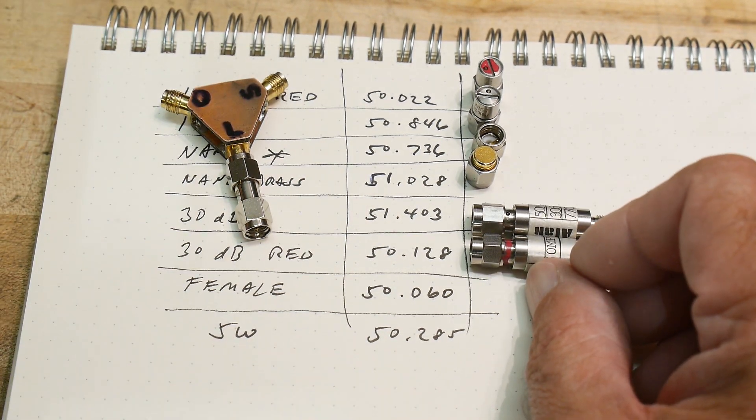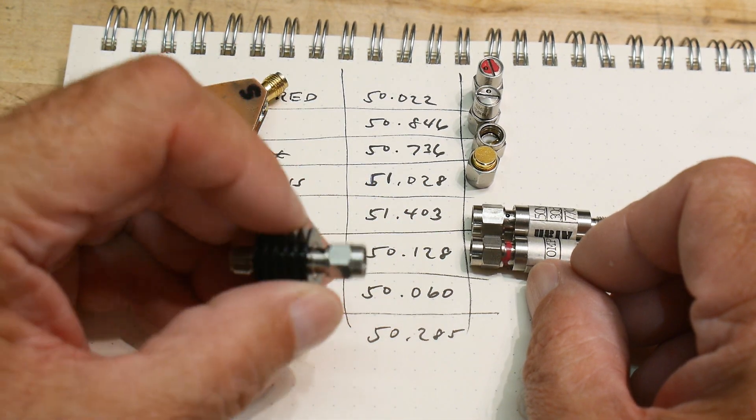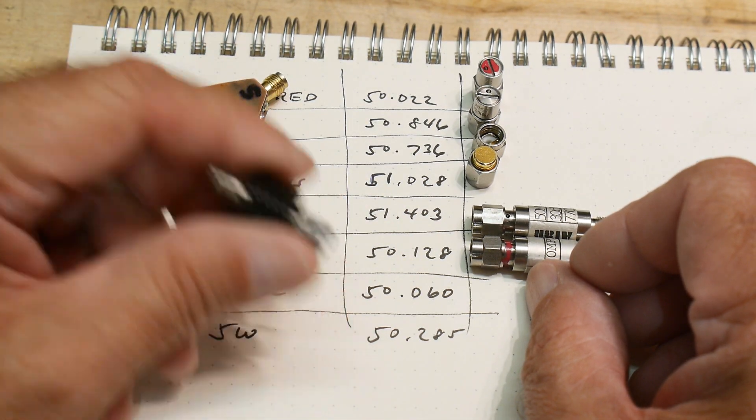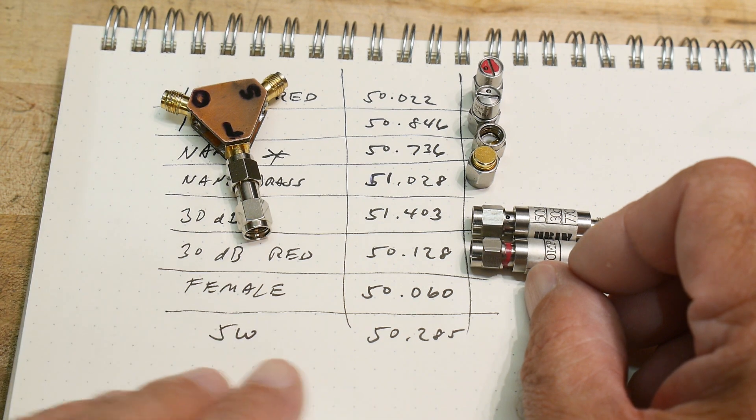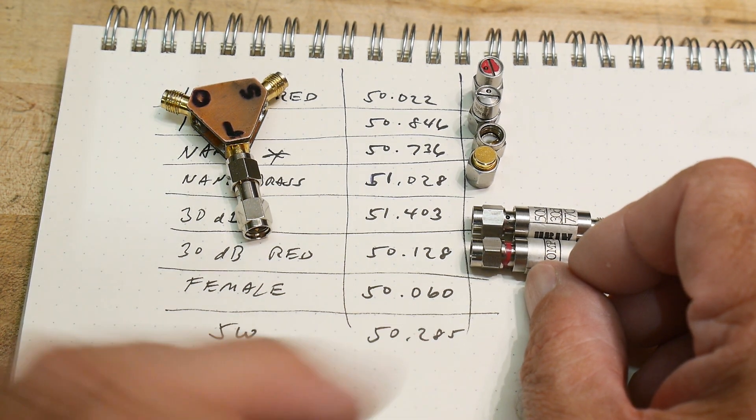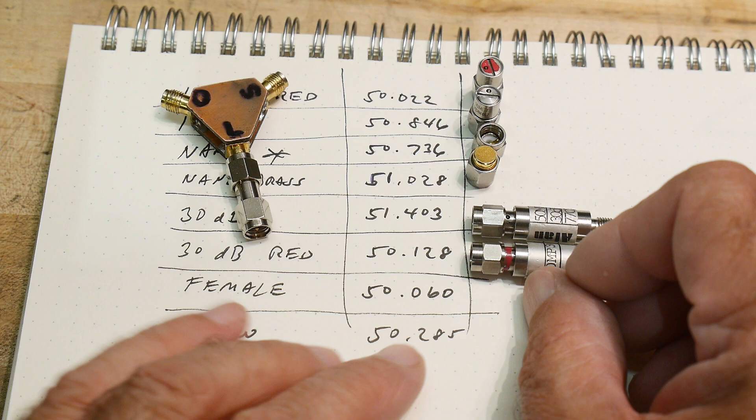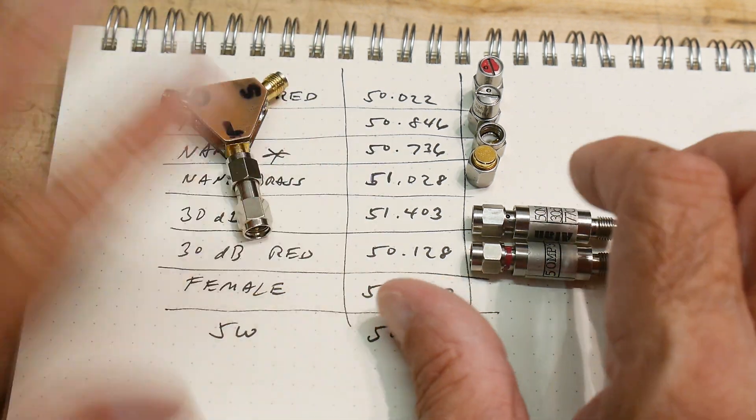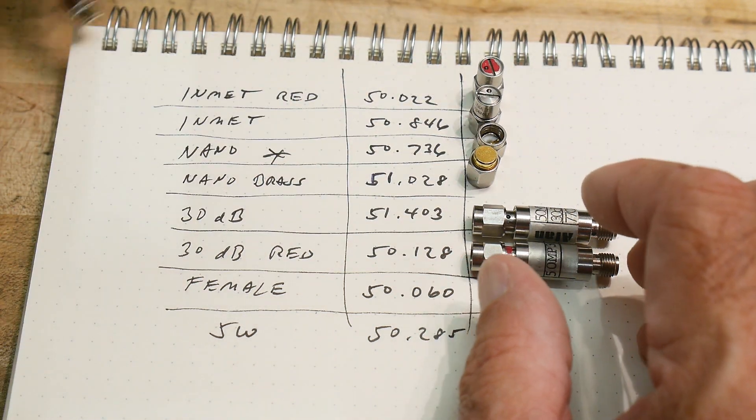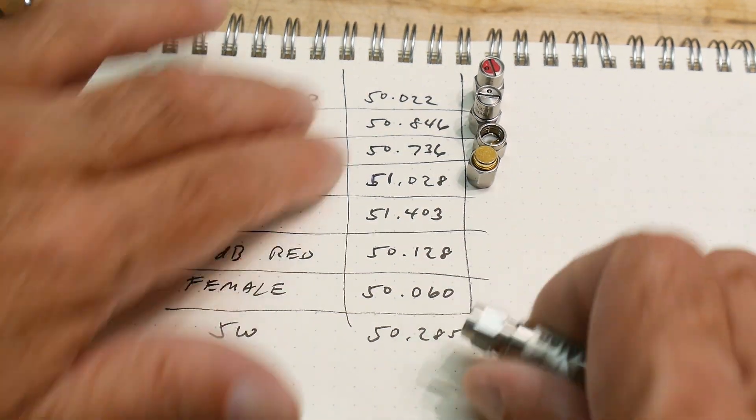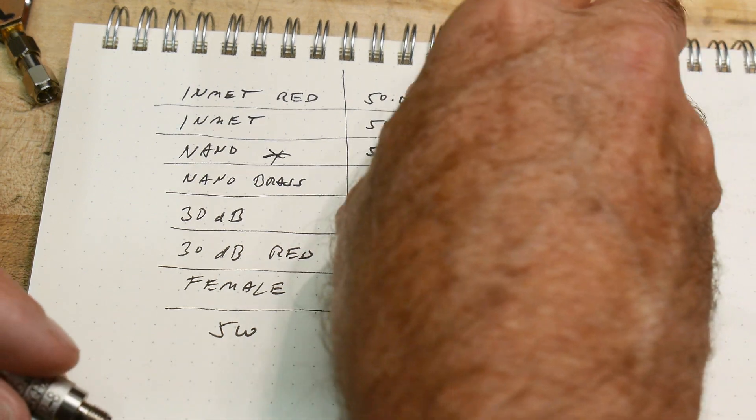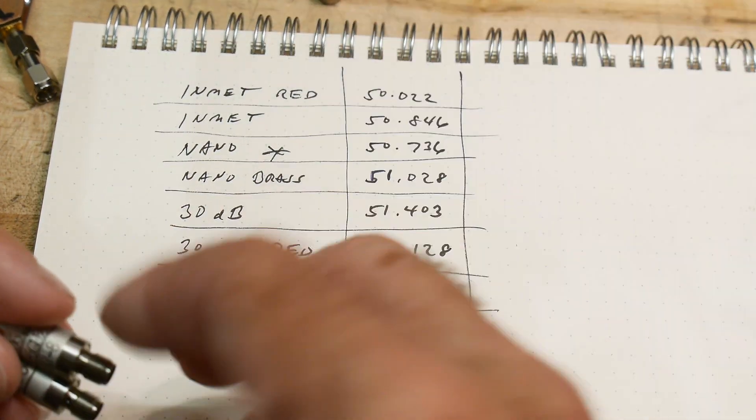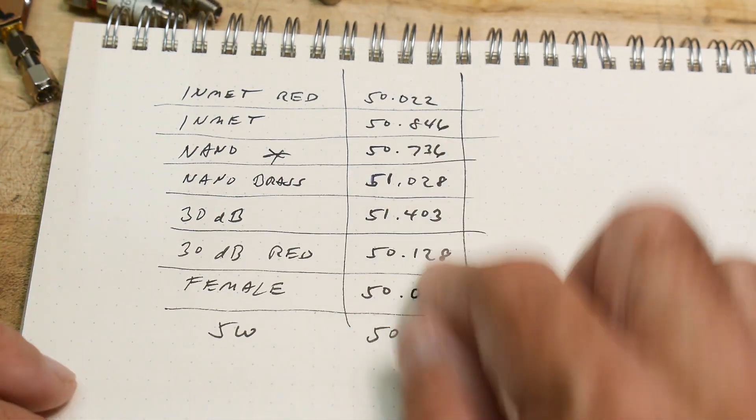And then I have a five watt, this is a Pasternak five watt load, I think. And it measures pretty good too. I know this one known to be good 50.285. So if you have some 50 ohm loads at home that you're not quite sure about, or you want to test, the first thing to do is measure them at DC. It doesn't tell you how they're going to operate at RF, but measure them at DC.